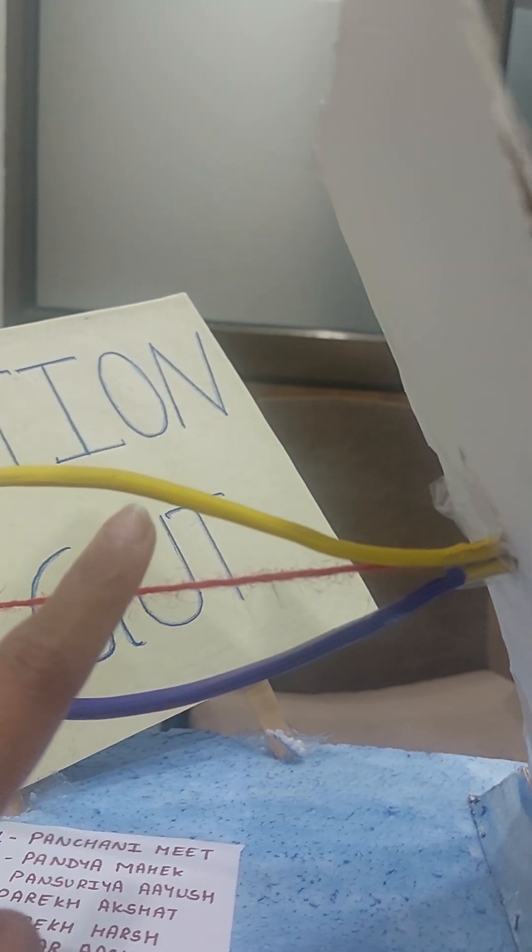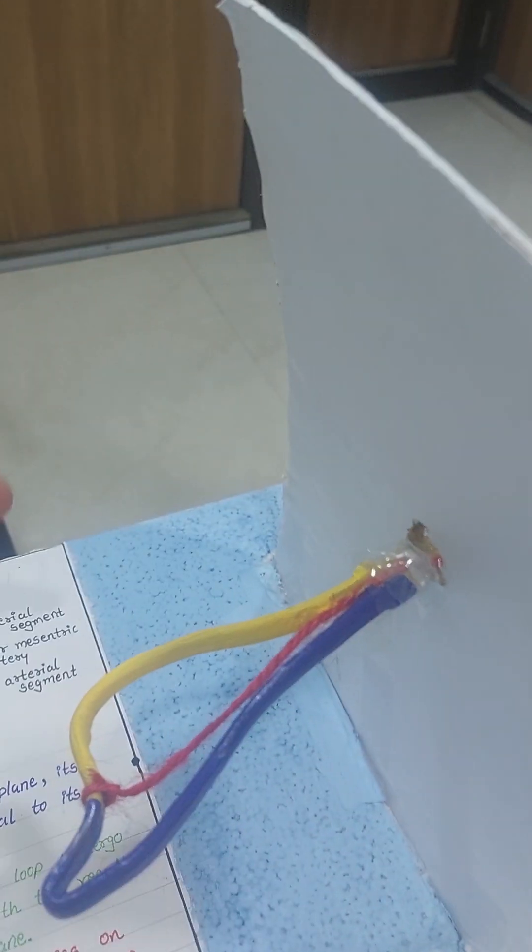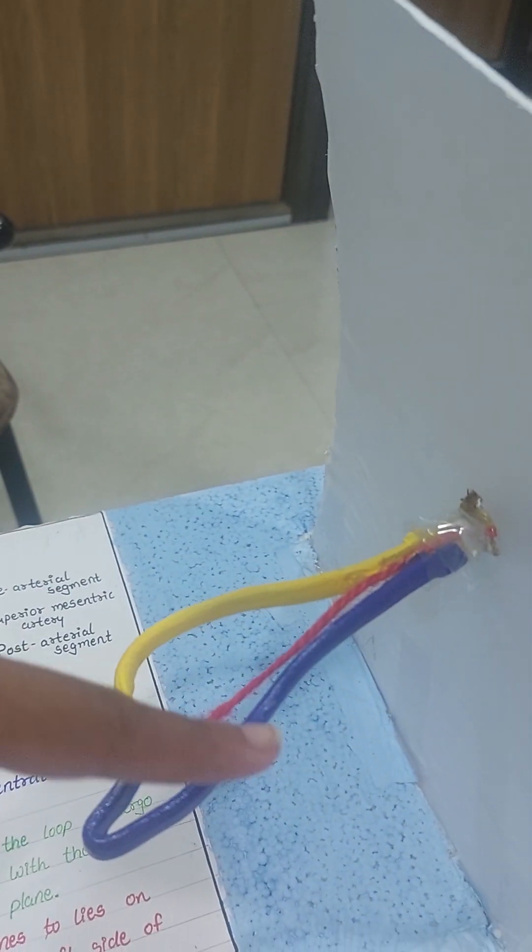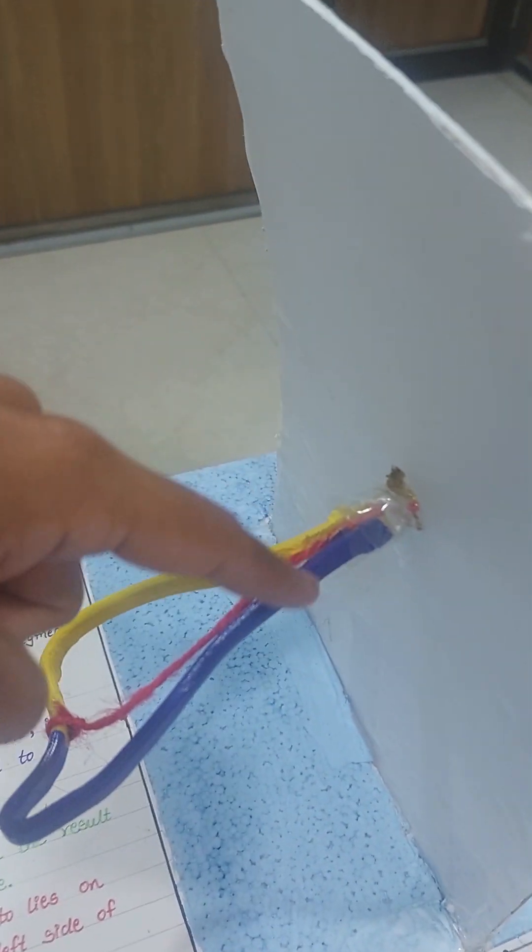Then what happens is, it rotates. Rotates to 90 degrees. How does it rotate? The pre-arterial loop, as you can see here, after rotation, it comes parallel. Then we have the superior mesenteric artery and the post-arterial loop.